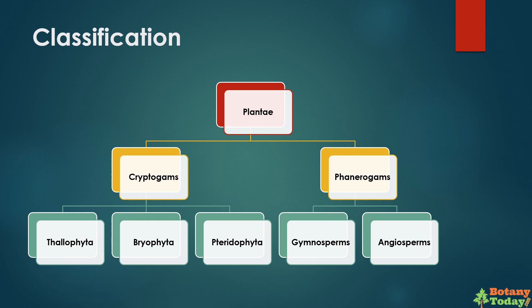Thallophyta and bryophyta have thallus-like body and do not have vascular tissues, while pteridophytes have well-distinguished plant parts and vascular tissues. In case of phanerogames, gymnosperms have naked seeds and angiosperms have covered seeds.